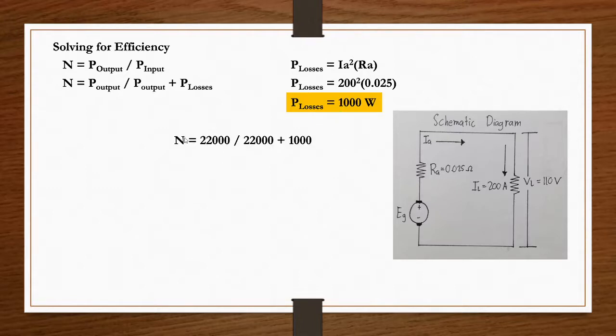Calculating for efficiency. Efficiency is 22,000 watts which is our power output divided by 22,000 which is our power output plus our power losses which is 1000.